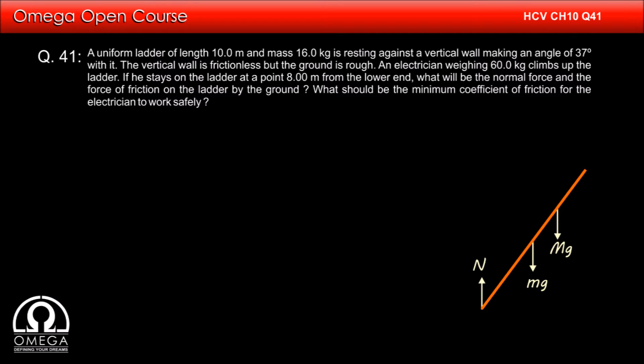The floor will apply a normal reaction, say N in vertically upward direction. The wall on which the ladder is resting will apply a normal, say N₁ in horizontal direction. Finally, force of friction acts on the floor which is preventing the ladder from slipping.